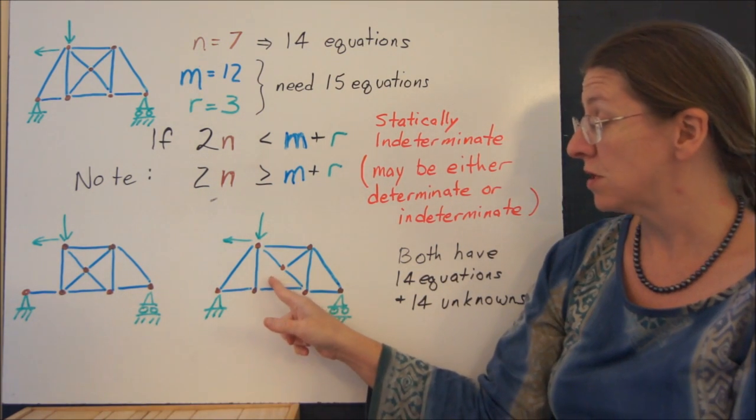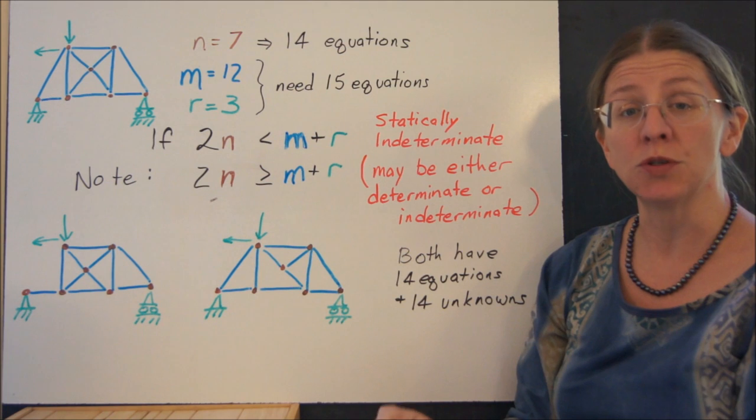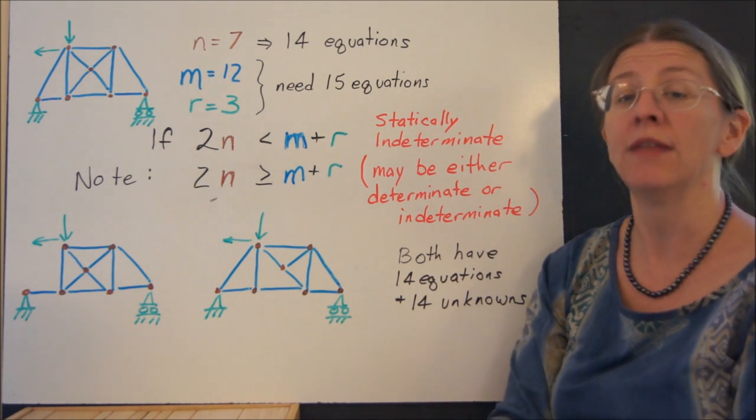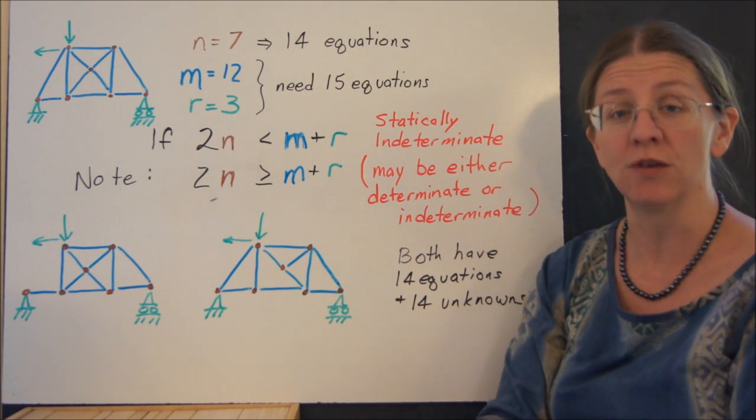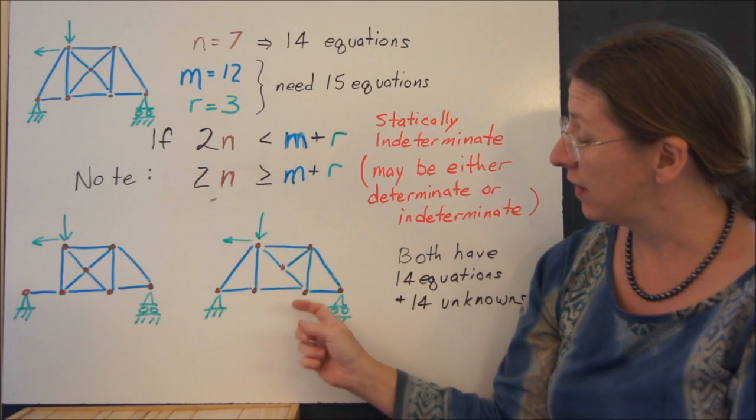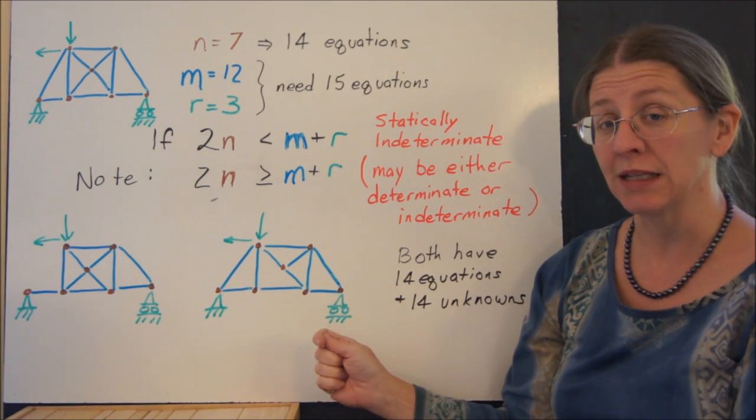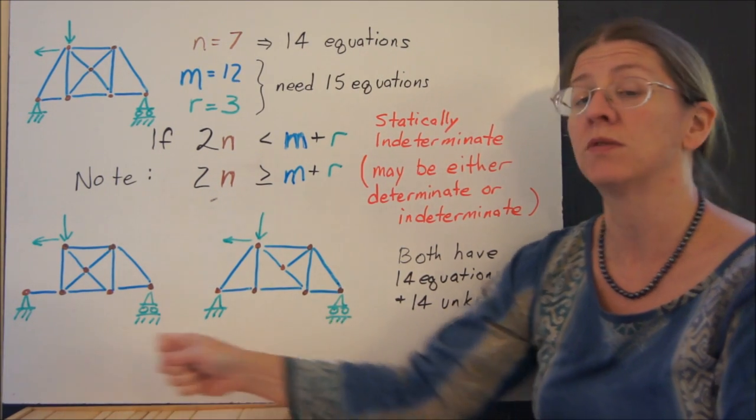Now if I take out one of those, what you have is once again a simple truss where you have a triangle, then you add two members and you get another triangle, and you add two members. That kind of thing is going to be statically determinate. This one can be solved, this one cannot.